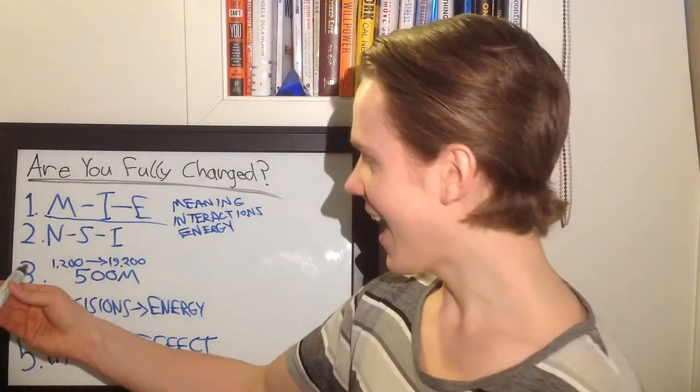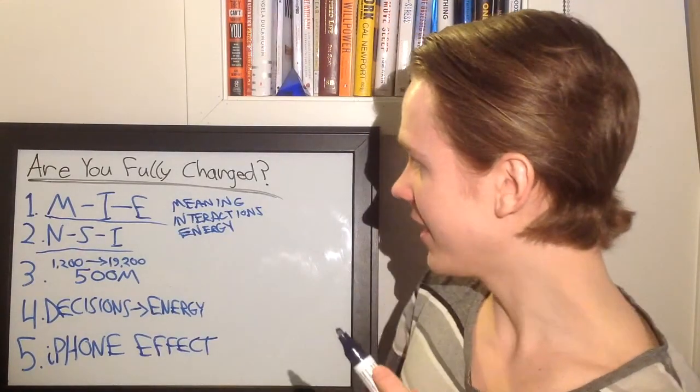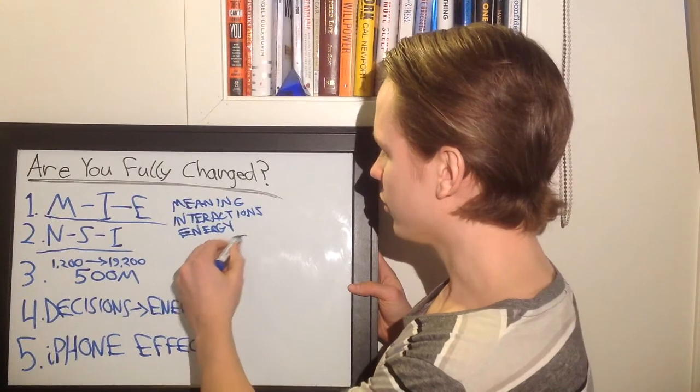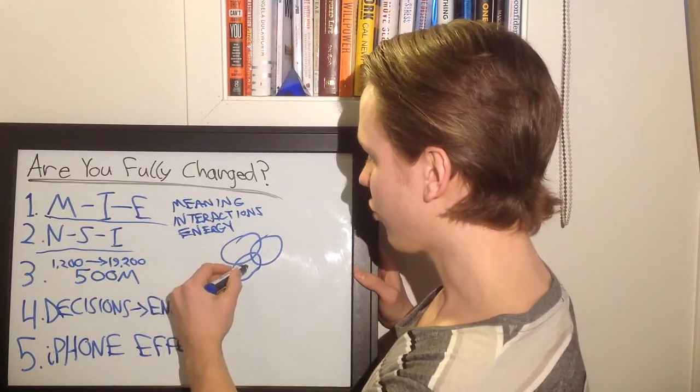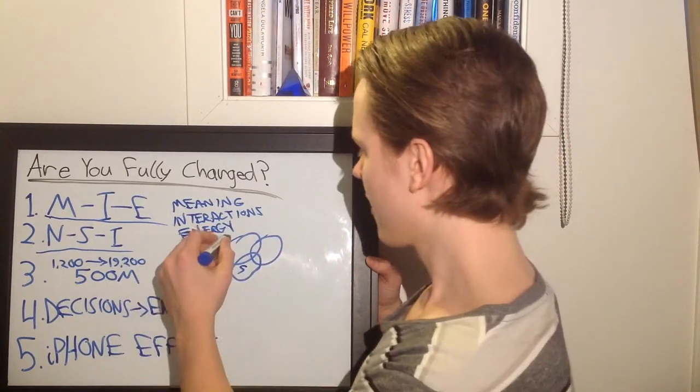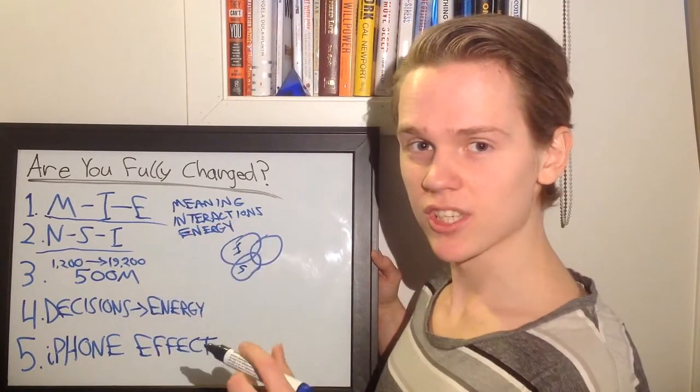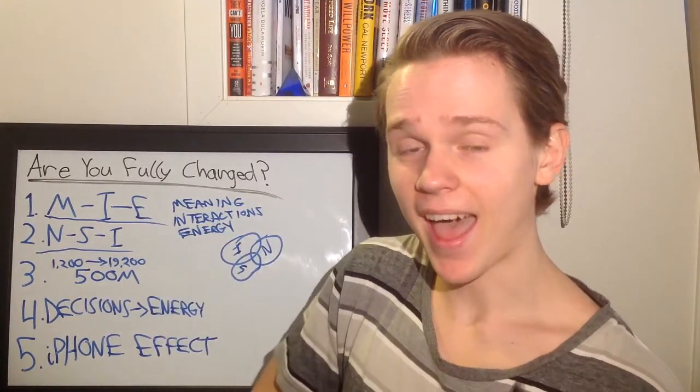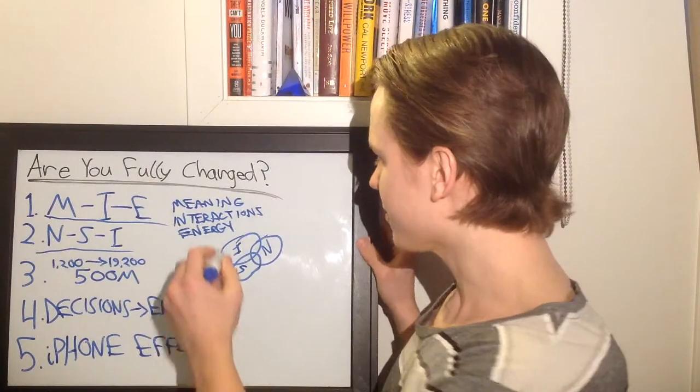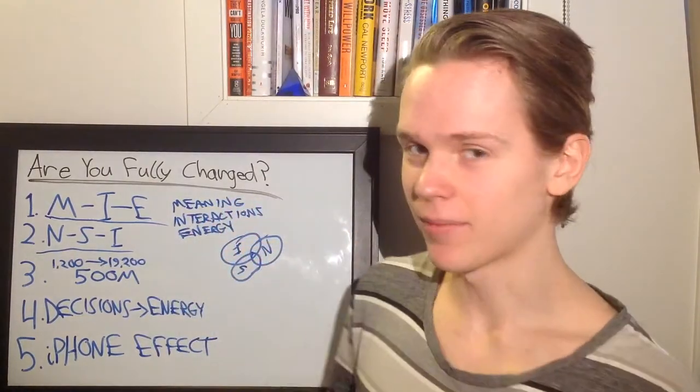And the next big idea is NSI. Thomas finds out that you create meaning in your life when your strengths and interests match the world's needs. And he presents a model of three circles which intersects each other. So in the first circle, you have strengths, interests, what you're good at. Then you have the second circle, your interests, what you want to do. And then you have the needs of the world and the people around you. And in the intersection between them, you find meaning in your life.